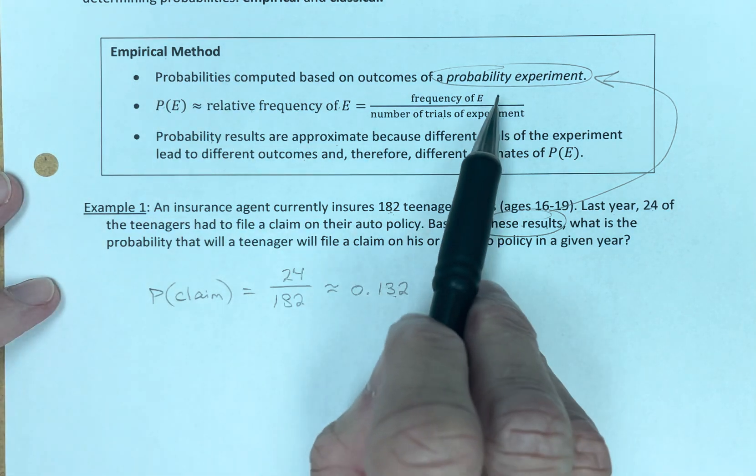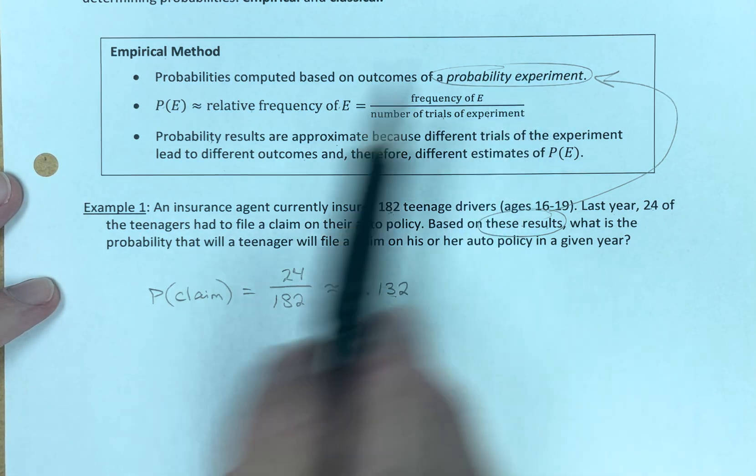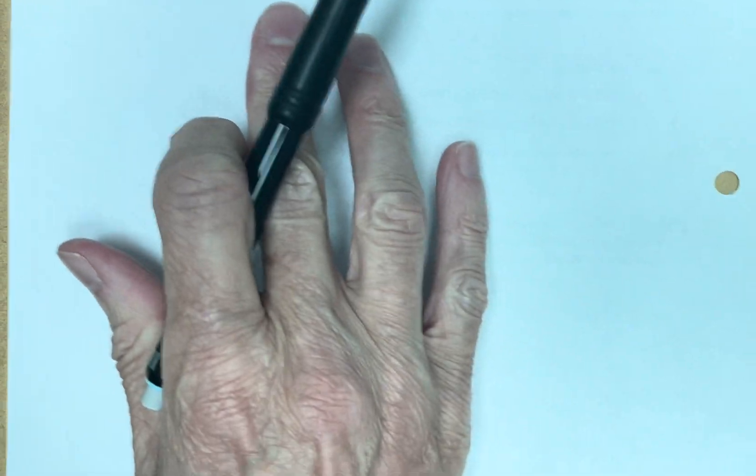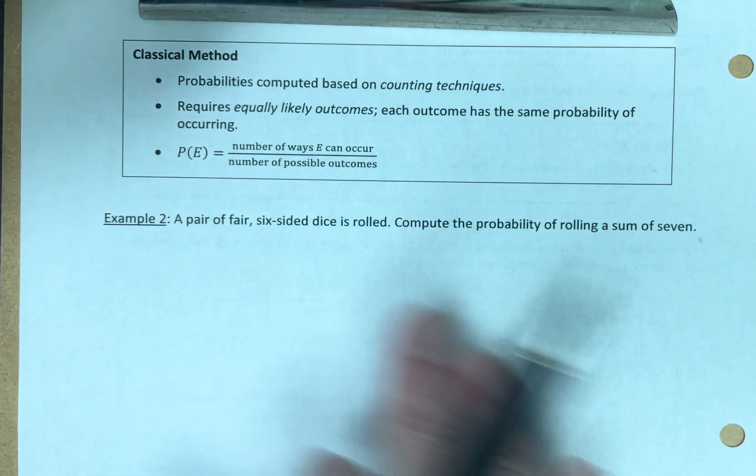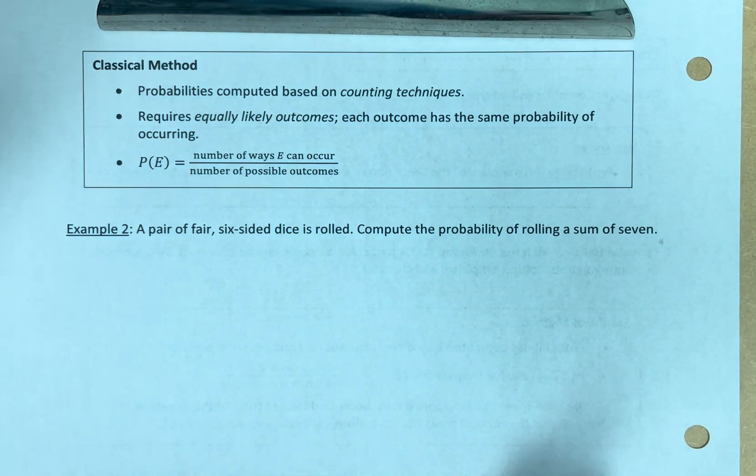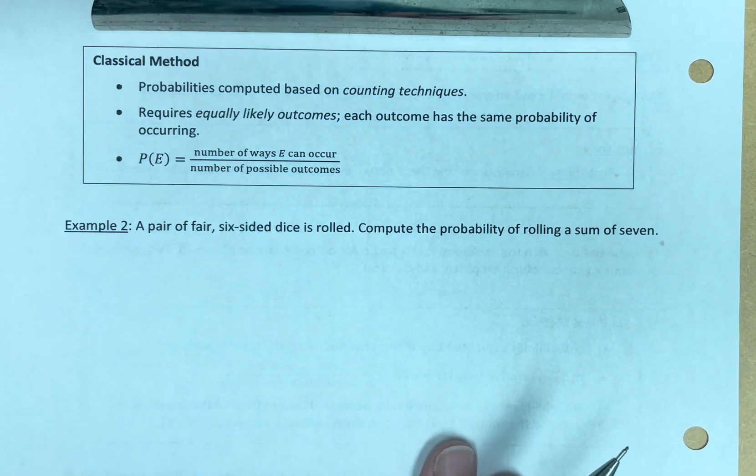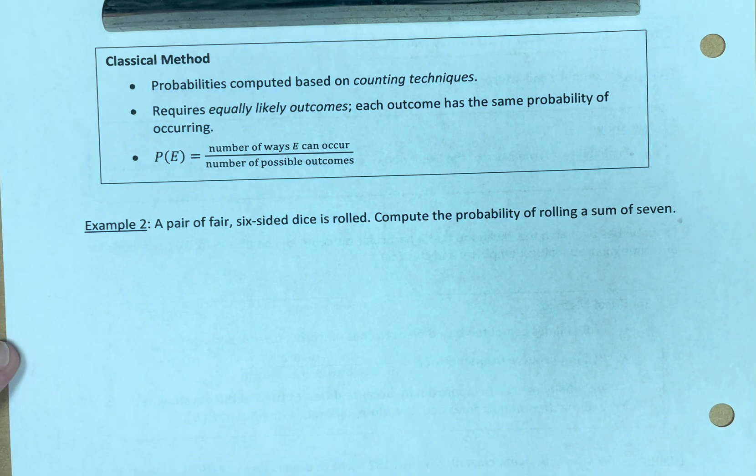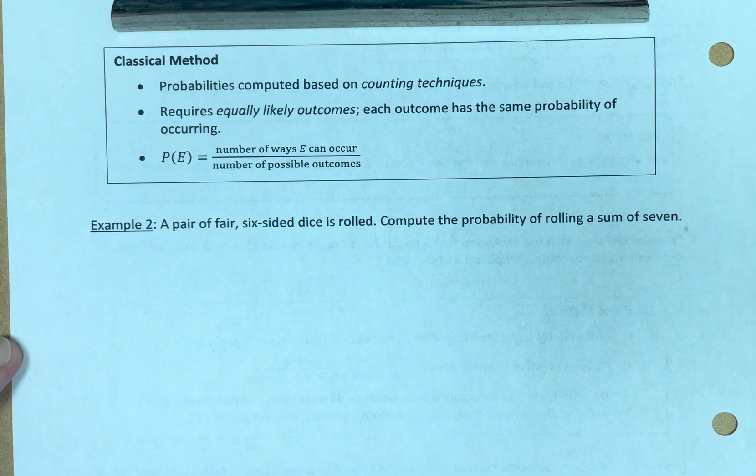So the empirical method is based upon an experiment you've done versus the classical method. Let me get my paper straight. The classical method is a little bit different.